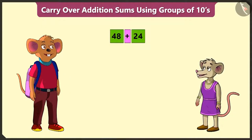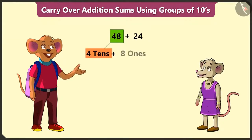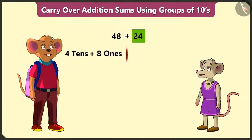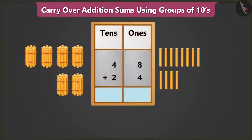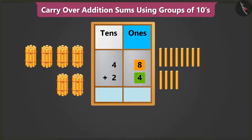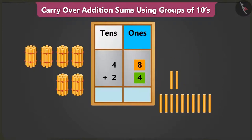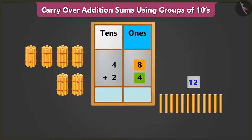How do we do that? 48 is 4 tens and 8 ones. Similarly, 24 means 2 tens and 4 ones. Now, to add both these numbers, we have to place them in the tens and ones boxes. First, let's add the numbers in the ones place. We have to add 8 ones to 4 ones. Count after 8: 9, 10, 11, and 12. This means 8 ones and 4 ones add up to 12 ones.